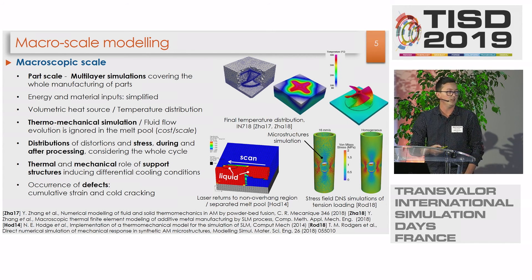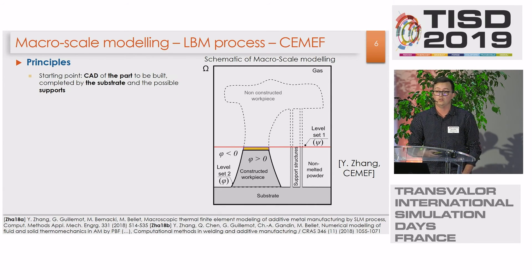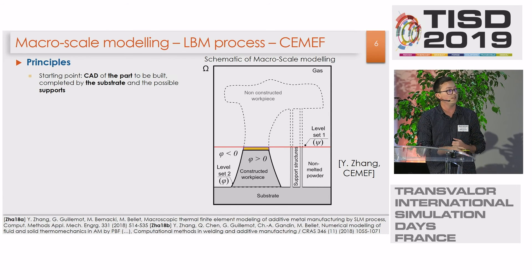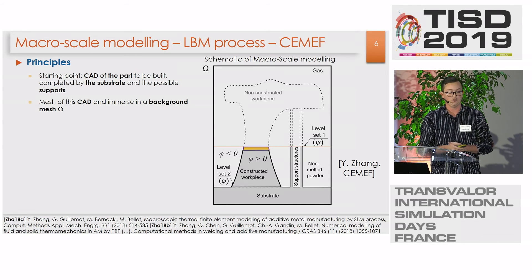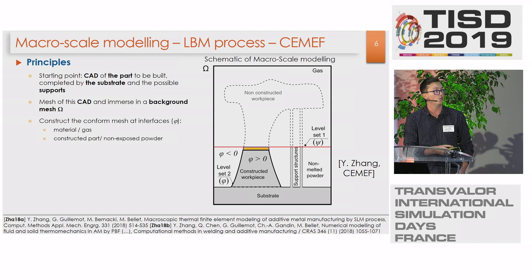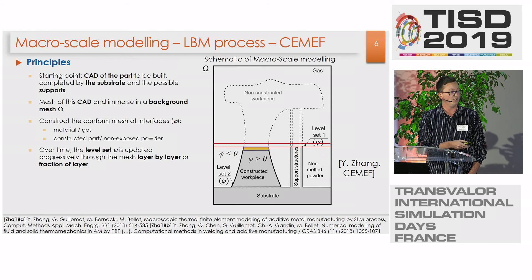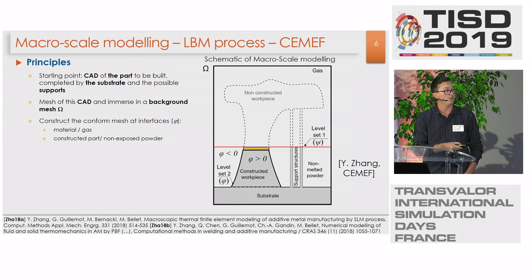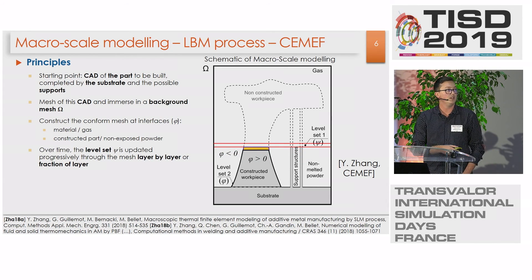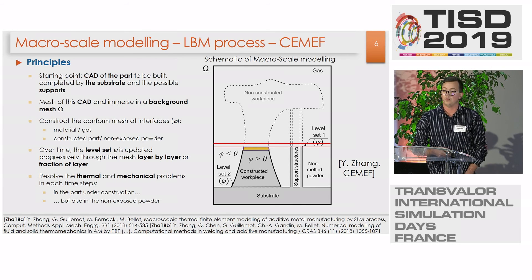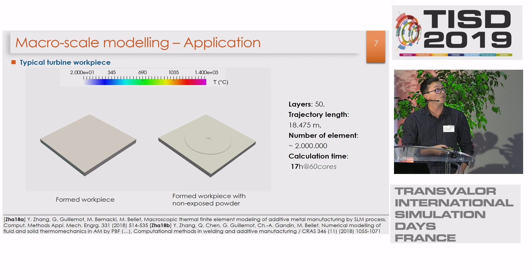We are able to predict defects such as cold cracking. The main principles of the macro scale modeling are as follows: we start with a 3D CAD model of the part, completed by the substrate and also by the additional supports. Then we mesh this CAD part in a background mesh. We construct the interfaces — the first one between the material and the gas, and the constructed part with the unmelted powder. Then over time, the level set function is updated layer by layer or fraction of layer by fraction of layer. Finally, by solving the thermal and mechanical problems at each time step in the whole part and also in the unmelted powder, we can have access to the residual stresses or the occurrence of defects.